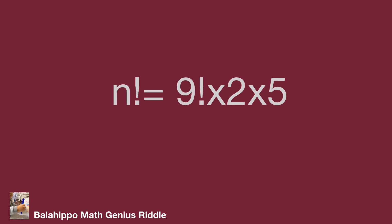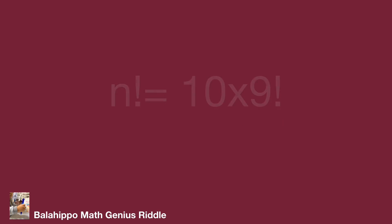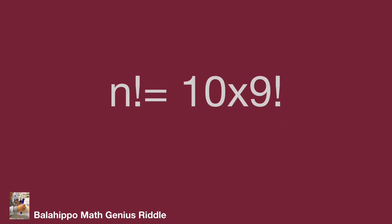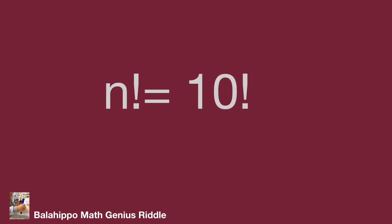Finally, we note that 2 times 5 equals 10, and 9 factorial times 10 equals 10 factorial. So the equation becomes n factorial equals 10 factorial, meaning n equals 10. That's the answer! Hope you enjoyed the video. Thank you.